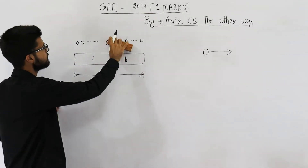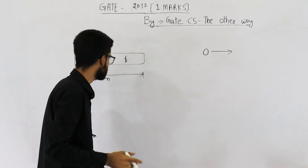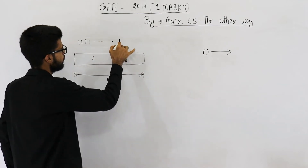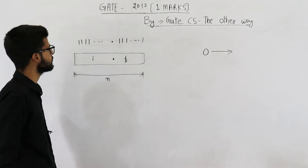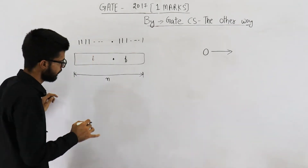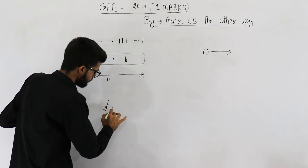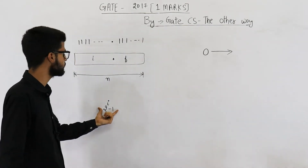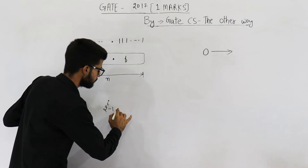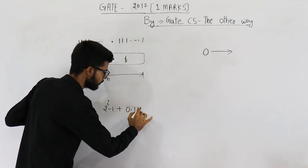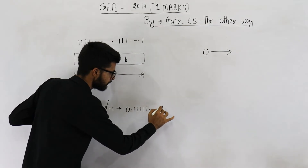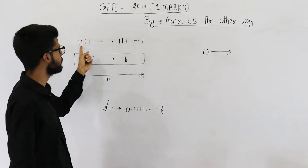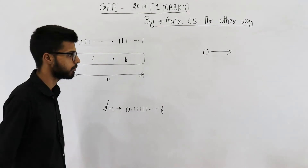What is the biggest number? It will be all ones dot all ones. The value of the integer part — all ones with i bits — is 2 raised to the power i minus 1. This is the biggest number representable with i bits for unsigned numbers. Plus the fractional part is 0.111...1 with f ones. This entire number equals (2^i − 1) plus 0.111...1 (f times). Just as 2.1 is written as 2 plus 0.1.